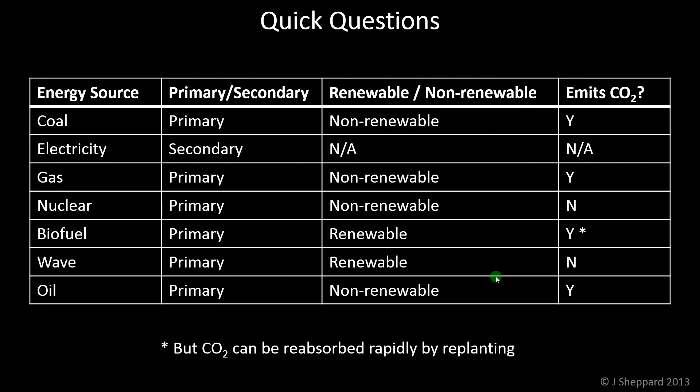Same with the carbon dioxide emission for electricity — we don't know; it depends which primary source we use to generate it. So it's only really sensible to ask the renewable/non-renewable and carbon dioxide emission questions for the primary sources. Coal, gas, nuclear, and oil are all non-renewable because they'll run out. Biofuel and wave are examples of renewables. For the emits CO2 column: all the fossil fuels — coal, gas, oil — yes. And biofuel, yes, but with a star, because as already mentioned you can reabsorb the carbon dioxide by replanting. So that one is slightly different — worth noting if you get it in a question. Thanks for watching.